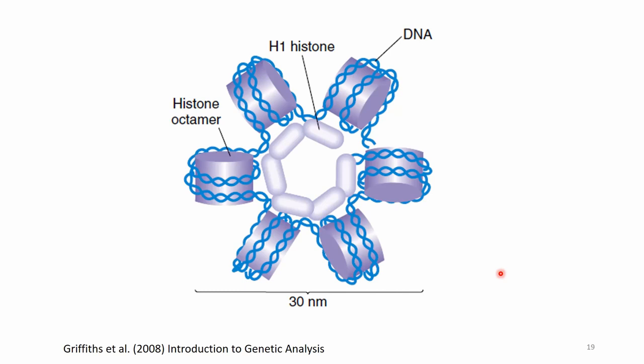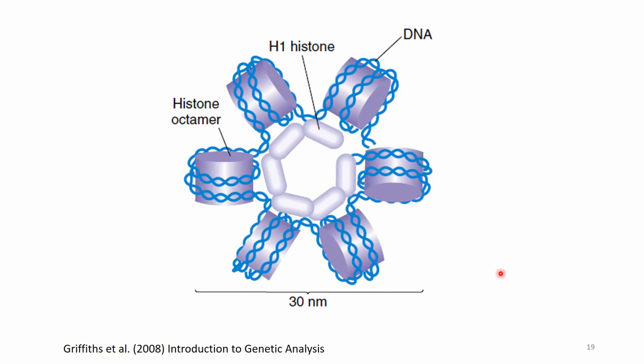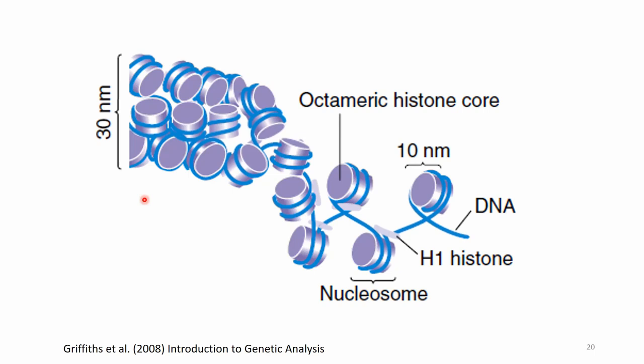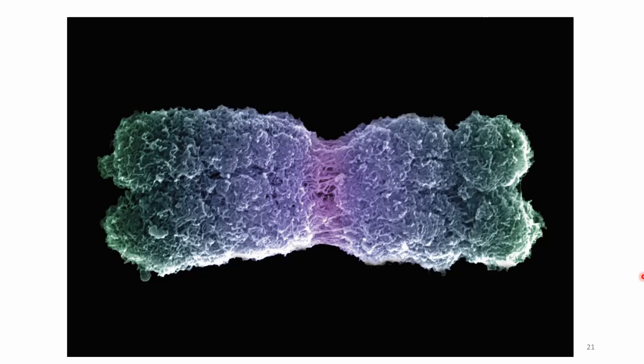DNA is very compact. We don't see free-floating DNA strands in cells — they are wrapped around on histones to make them more compact. The DNA is wrapped on histone octamers, and these octameric histone cores are further wrapped together in even tighter structures, which form the so-called chromosomes.